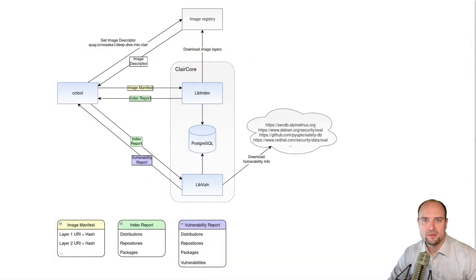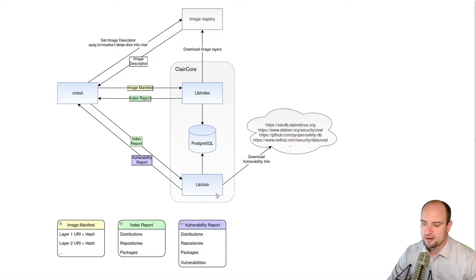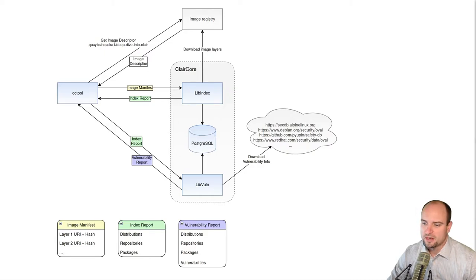Let me now walk you through the image vulnerability scanning process. In the middle of this diagram I'm depicting ClairCore. ClairCore consists of two modules: libindex and libvulnerability. Each of the modules runs in its own daemon and exposes its own API. Both daemons talk to the same Postgres database, however they are not sharing any data through it, meaning you could also deploy each daemon with its own dedicated database.